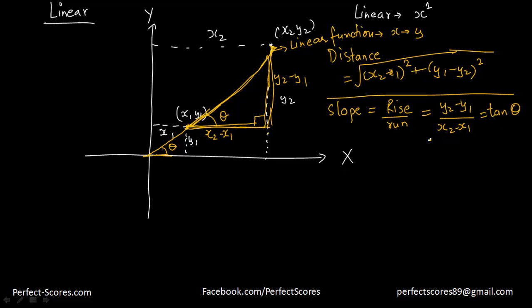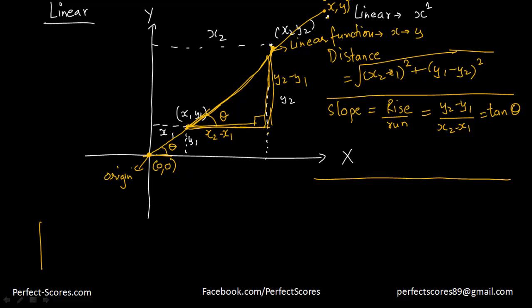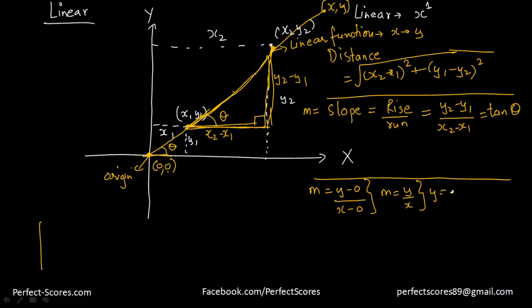Now if the line passes through the origin (0, 0) and any other point (x, y) on the line, the slope m equals y2 minus y1 over x2 minus x1, which simplifies to m equals y over x. That means y equals mx. This is the equation of any line that passes through the origin. For example, y equals x, y equals 2x, y equals 3x — different values of m give different lines through the origin.